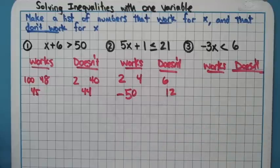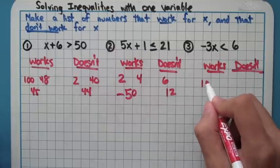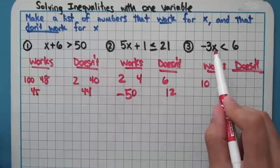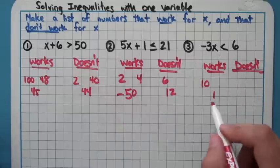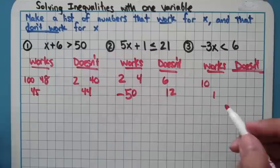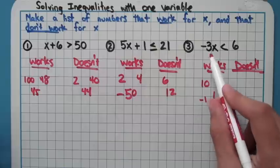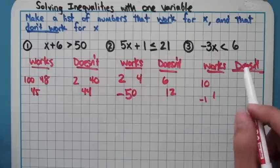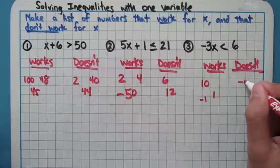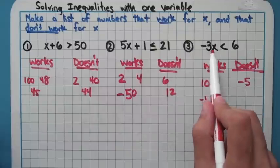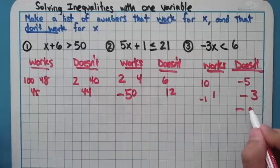And finally for the third problem here, -3 times what number gets you something less than 6? If I do -3 × 10, that's -30, and -30 is less than 6. If I do -3 × 1, I get -3, that's less than 6. Even if I plug in -1, -3 × -1 = 3, which is less than 6. Numbers that don't work here are actually going to be numbers that are pretty far to the left of the number line. Like if I did -5, -3 × -5 = 15, and 15 is not less than 6. Negative 3 wouldn't work, negative 84, numbers like that.